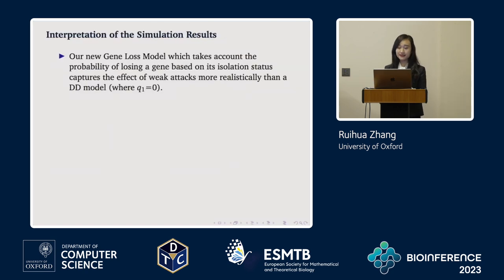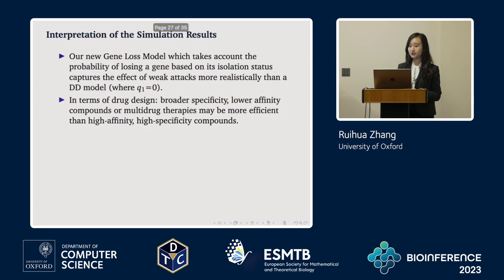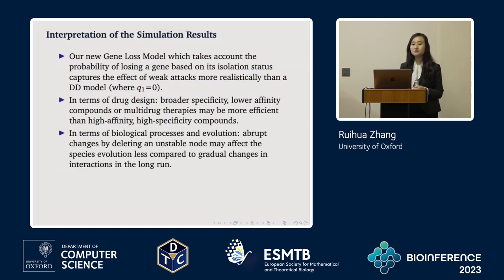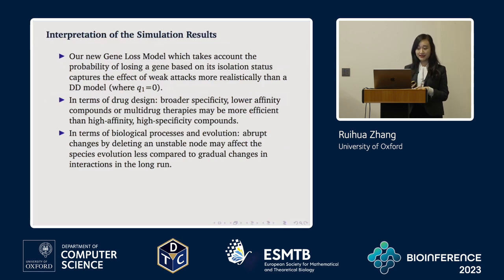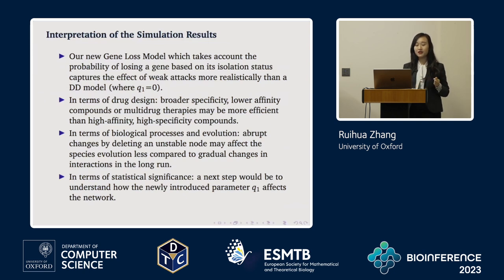The interpretation of results is as follows. First, the new gene loss model captures the effect of vague attacks more realistically than the standard duplication divergence model, validating the drug design finding that broader specificity, lower affinity compounds can be more efficient than high affinity, high specificity compounds. In terms of biological evolution, abrupt changes by deleting an unstable node may affect a species' evolution less than gradual changes in interactions. The next step is to better understand how the newly introduced parameter Q1 affects the network.